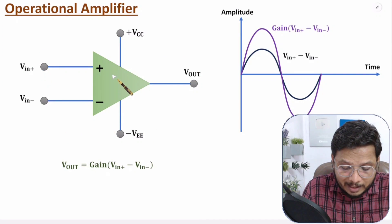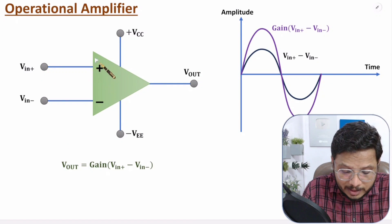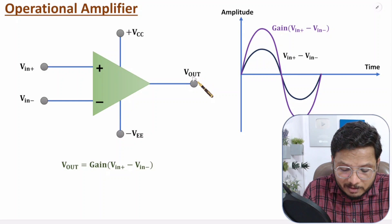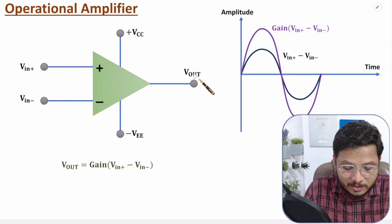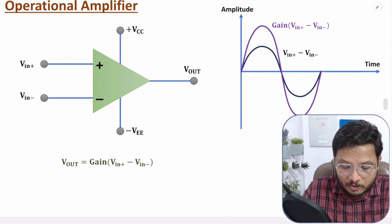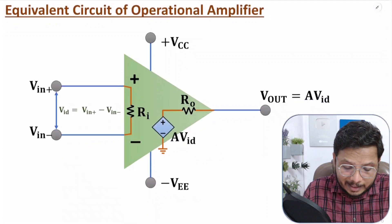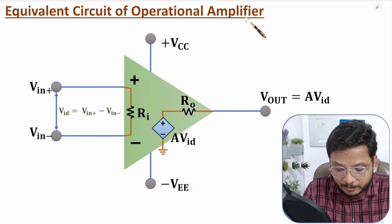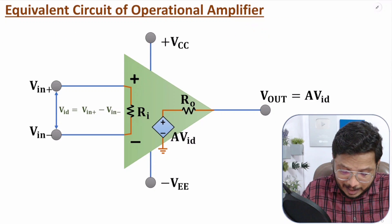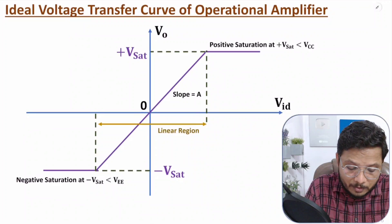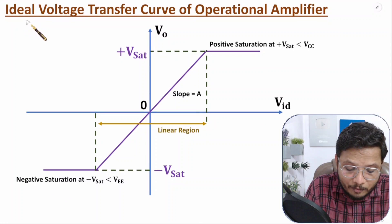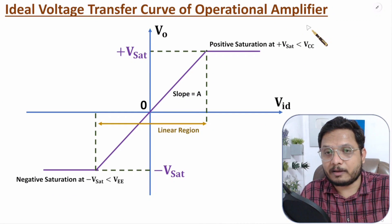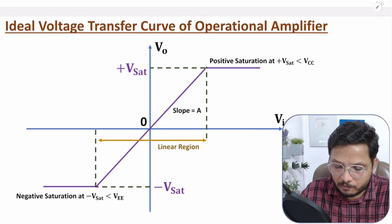And here I will explain how the operational amplifier functions — how we will be getting the output. After that, I will explain the equivalent circuit of the operational amplifier, and at last I will explain the ideal voltage transfer curve of the operational amplifier. So let us begin this video.